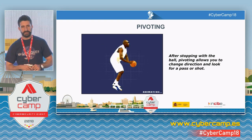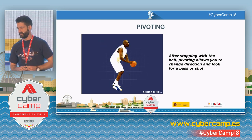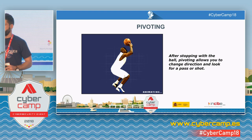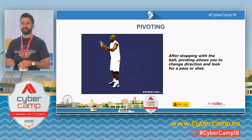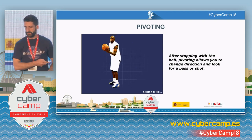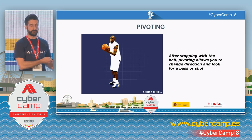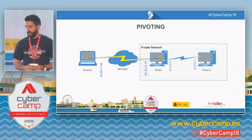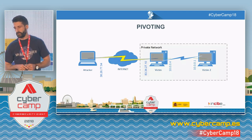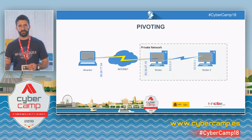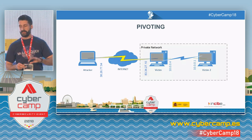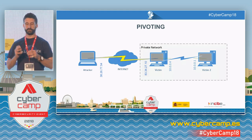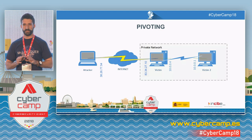Now, the concept of pivoting. This is the definition from NVC about pivoting: after stopping with the ball, pivoting allows you to change direction and look for a pass or a shot. Translating that into the hacking world — exploiting and post-exploiting — we have a private network on the right with two devices, and on the left, the Internet with a public address. Internal traffic can be routed to the Internet, but an internal IP will never reach the Internet.